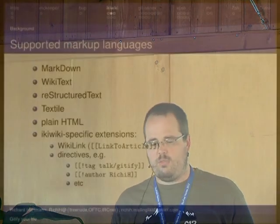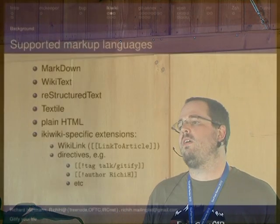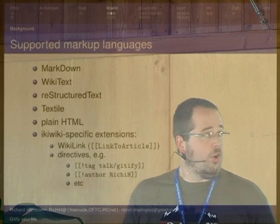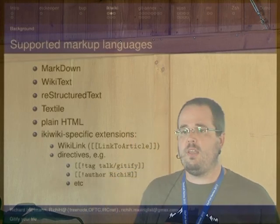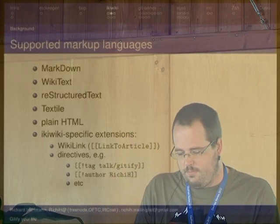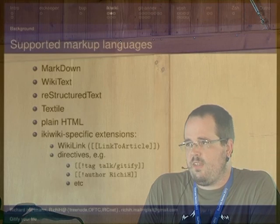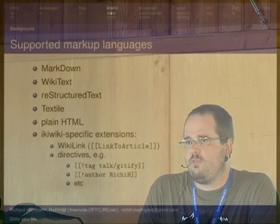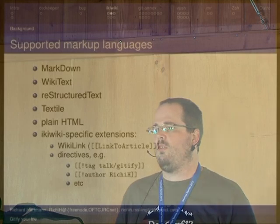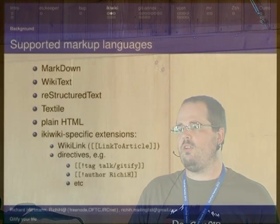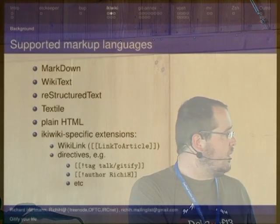It supports various markup languages. The best one — debatable, but in my opinion it's Markdown. It supports wiki text, restructured text, textile, plain HTML, and there are Ikiwiki-specific extensions. For example, normal wiki links, which are a lot more powerful than the normal linking style in Markdown. It also supports directives, which basically tell Ikiwiki to do special things with a page. For example, you can tag your blog pages, or you can generate pages which automatically pull in content from different other pages.